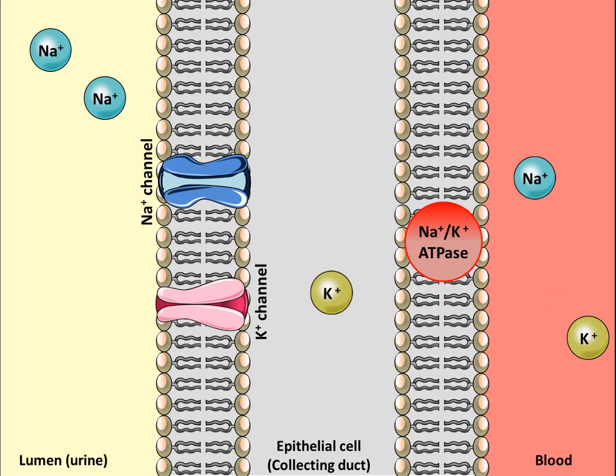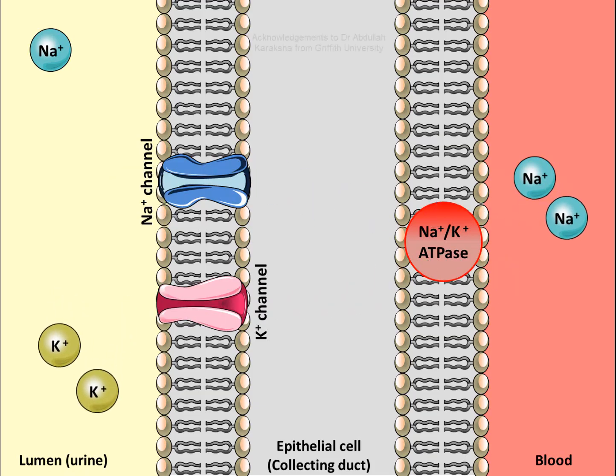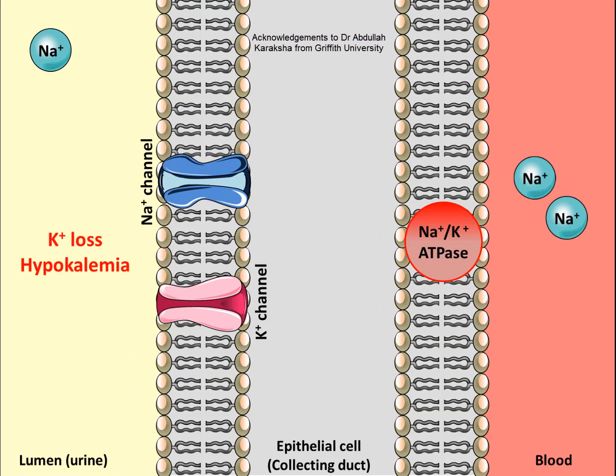Potassium is then secreted into the urine, or the filtrate, via the potassium channel. The constant reabsorption of sodium and potassium continues, causing a loss of potassium from the blood. This may eventually lead to potassium loss and hypokalemia.